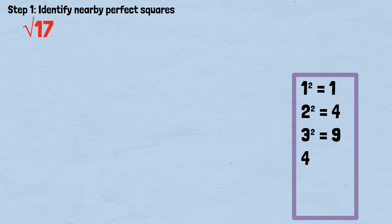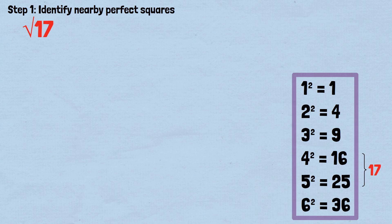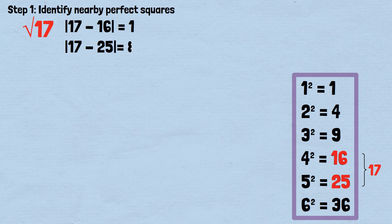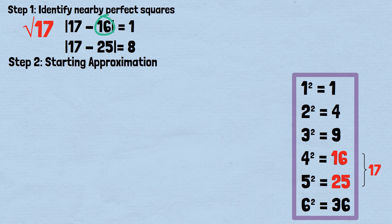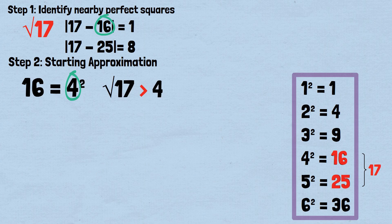6²=36. The number 17 falls between 16 and 25. Since |17−16|=1 and |17−25|=8, the number 16 is closer to 17. Step 2: starting approximation — since 16=4², our starting approximation is 4. We know that the square root of 17 is slightly larger than 4.